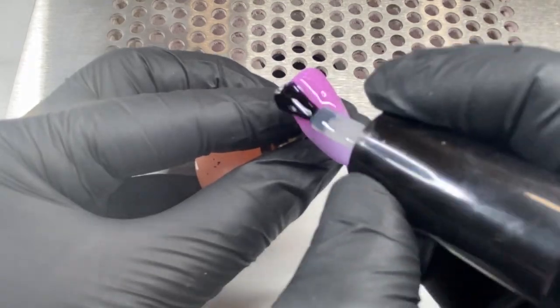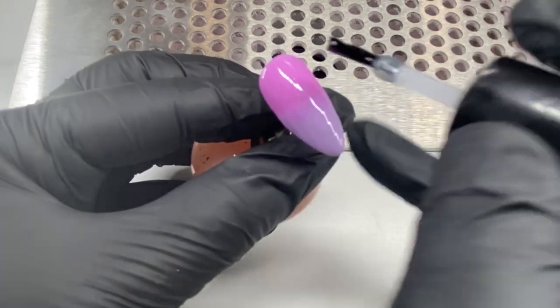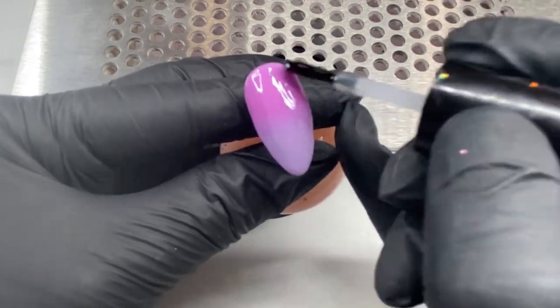Finally, I'm going to go in with a layer of Don't Be Tacky as my top coat to finish off this ombre. Just do one thin coat of your top coat and cure in the lamp for 60 seconds.